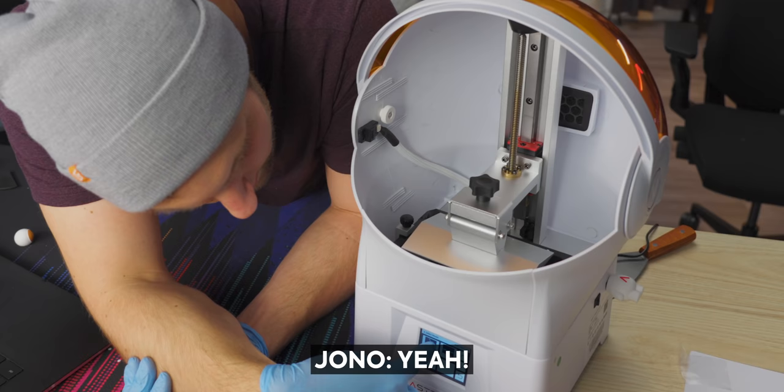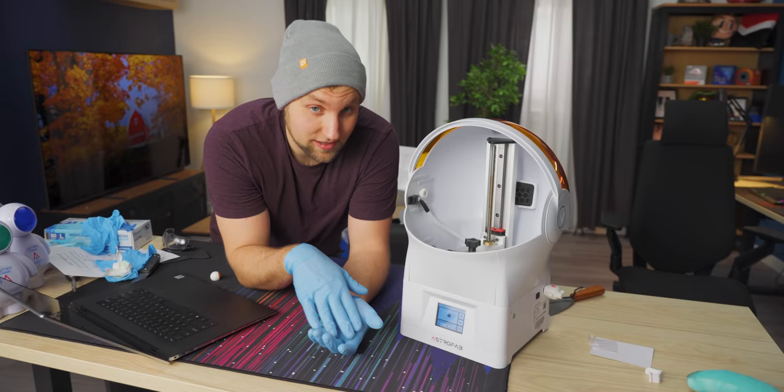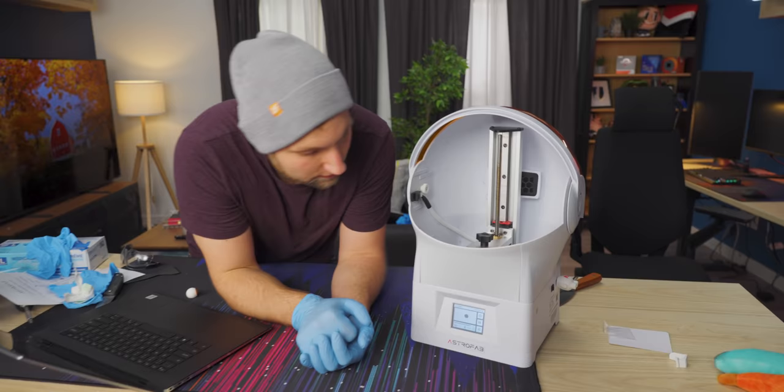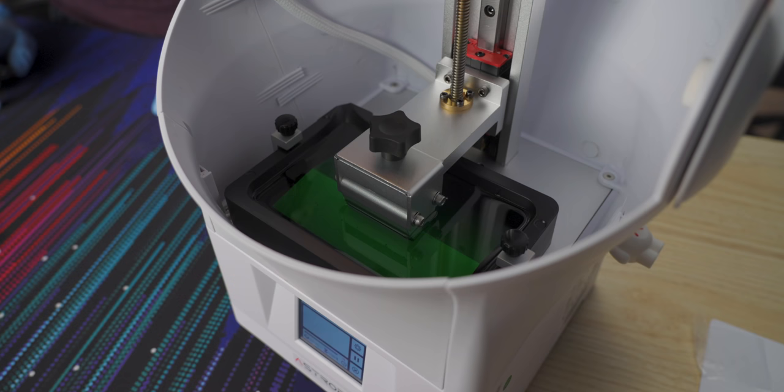So, print. So, what's happening is it's going to cure for about two seconds, give or take. It'll sit for another second or two and it's going to peel and we'll see it lift. You should hear a pop if everything's going correctly. The first layer often will cure longer, 9 to 12 seconds, so you get a good adhesion to the aluminum plate. Hear that? Yeah, so that's peeling off of the FEP.